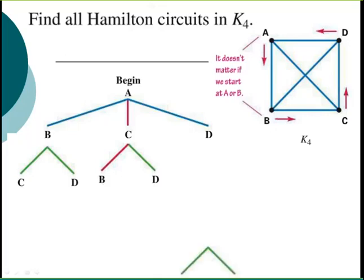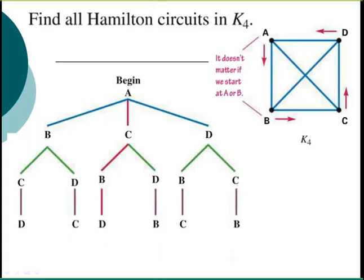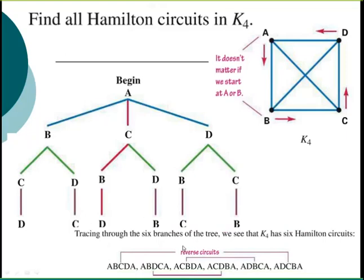In the end, these would be the final routes. If I went from A to B to C, I'd end up at D. It's all about how many ways can this happen. If I trace through the six branches of the tree, we see that K_4 has six Hamilton circuits.